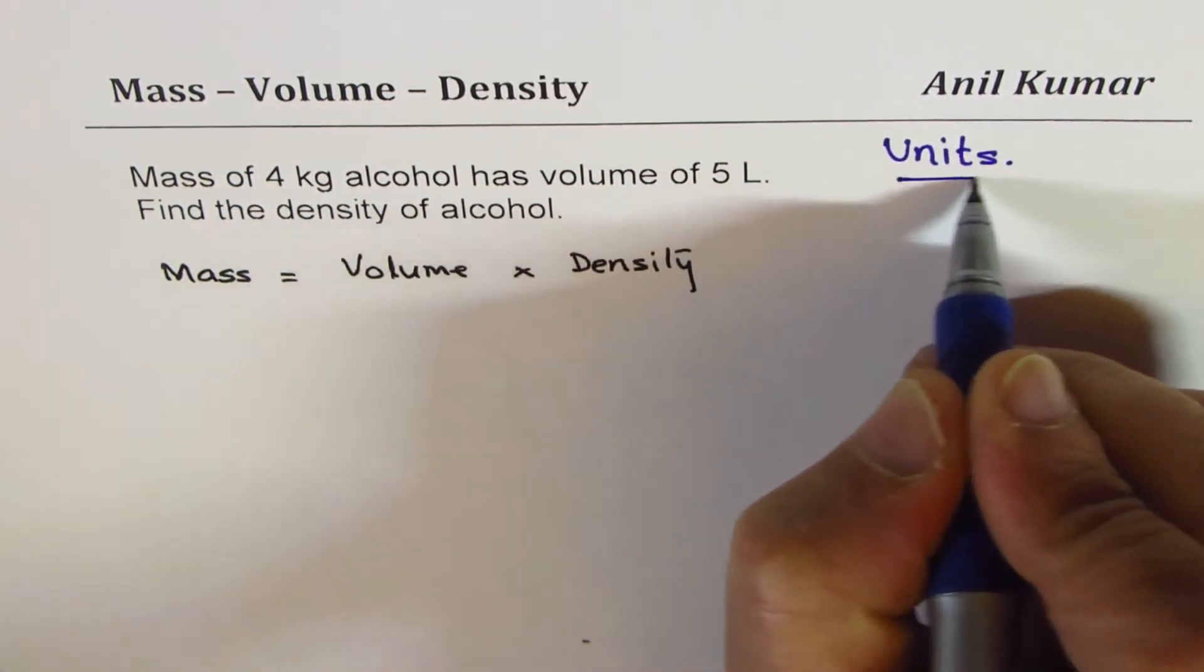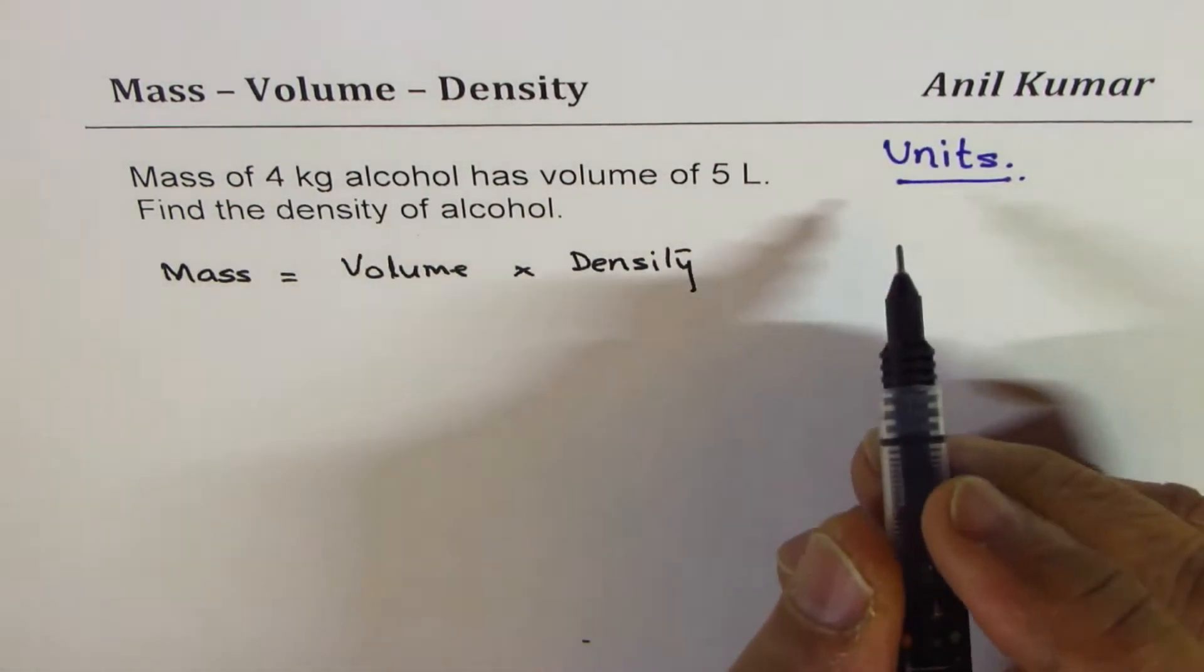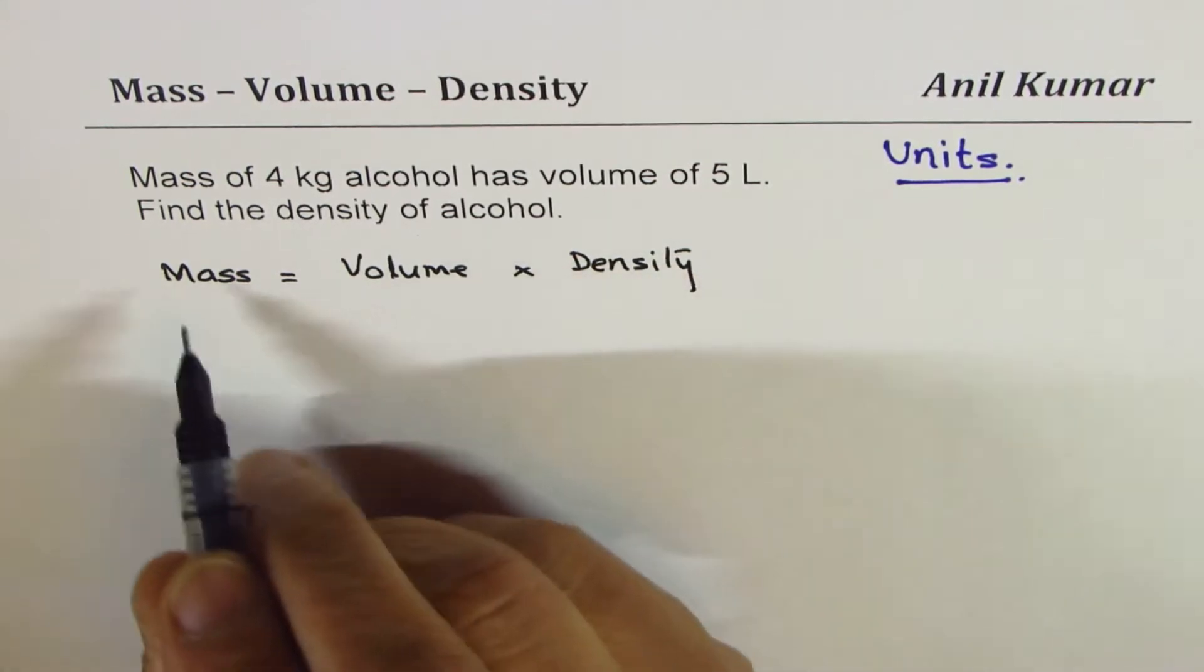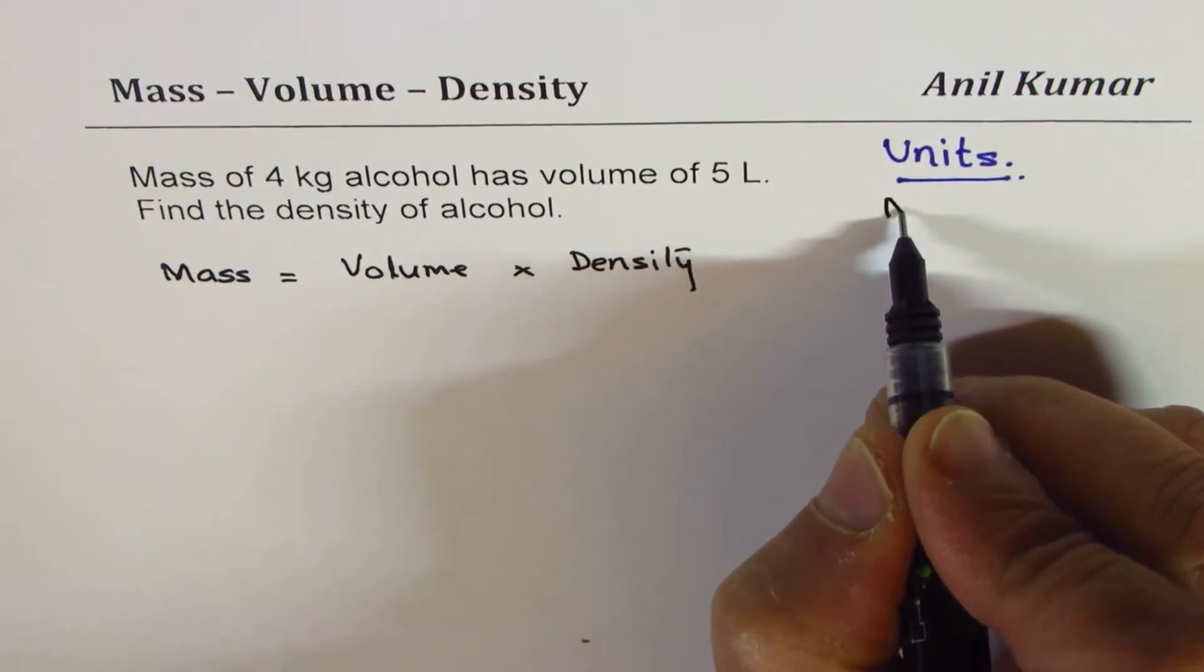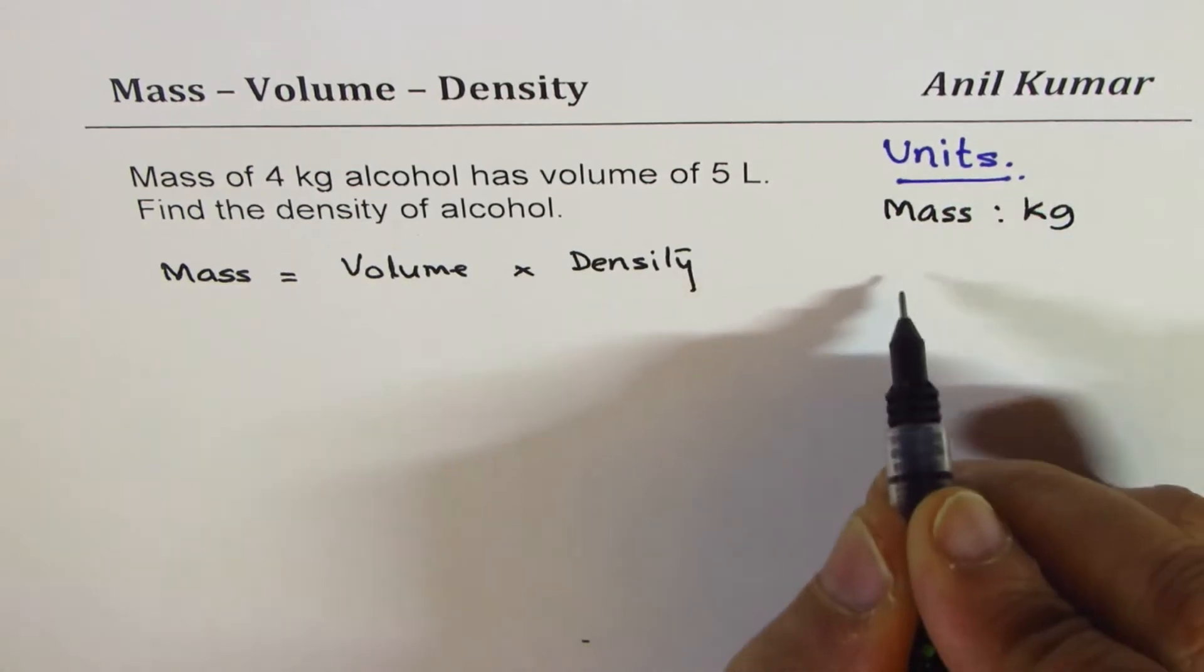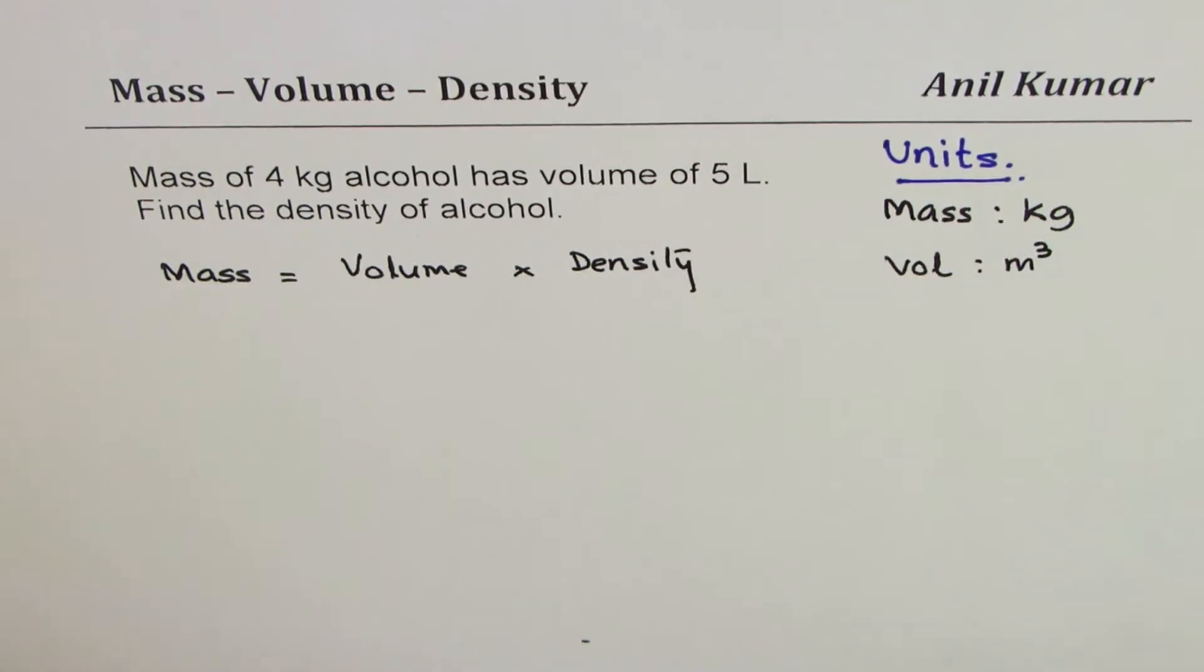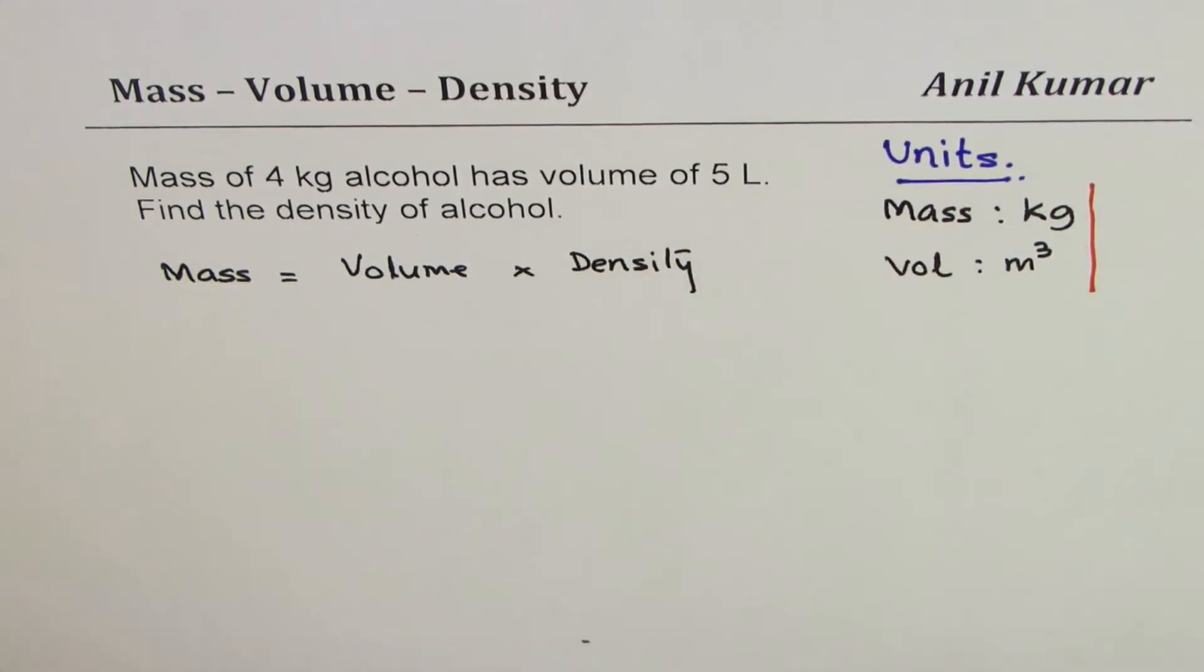Let me tell you something about the units. Mass, volume, and density could be—mass could be in kg, in that case volume should be in meter cube. That could be one set of units. The other option is that we have mass in grams and